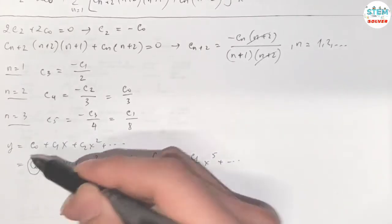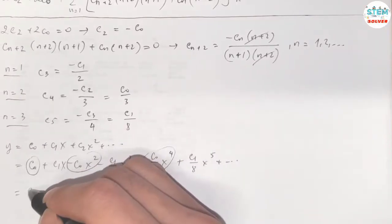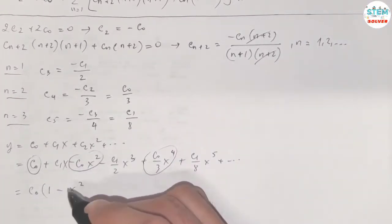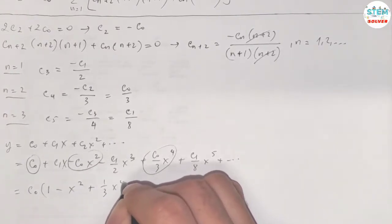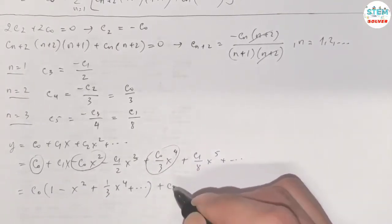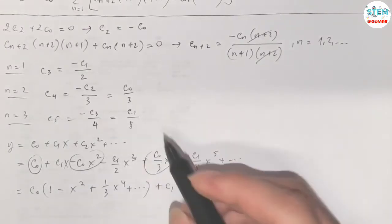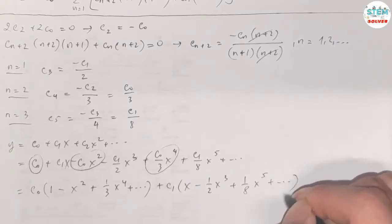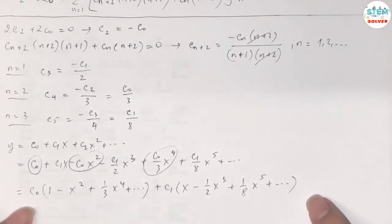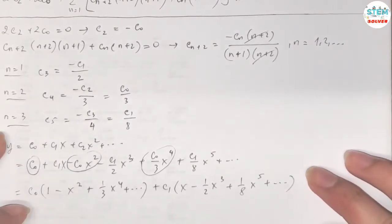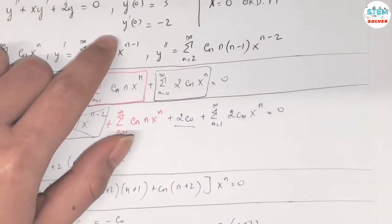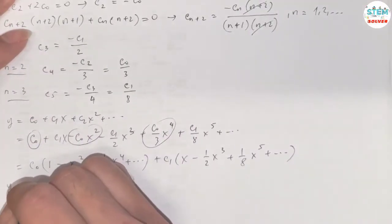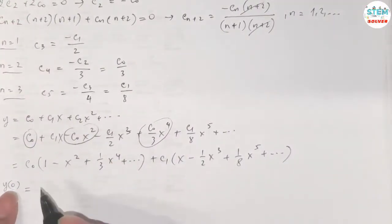Now let's collect the c_0 terms and factor out c_0. In parentheses we have: 1 minus x squared plus (1/3)x to the 4th plus dot dot dot. Then collect the c_1 terms: x minus (1/2)x cubed plus (1/8)x to the 5th plus dot dot dot. So this is our general solution. But since we have an initial value problem, we still need to solve for the constants c_0 and c_1.